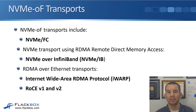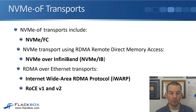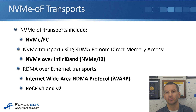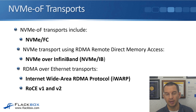NVMe OF is the transport between the host and the storage system, and there are different options you can use for the network infrastructure. You can use NVMe over Fiber Channel. You can also use NVMe transport over RDMA — remote direct memory access. The first RDMA option is NVMe over InfiniBand. There are also RDMA over Ethernet transports: iWARP and RoCE version 1 and version 2. The main difference between RoCE version 1 and version 2 is that in version 1, the host and storage system need to be on the same IP subnet, whereas version 2 is routable and they can be in different IP subnets.